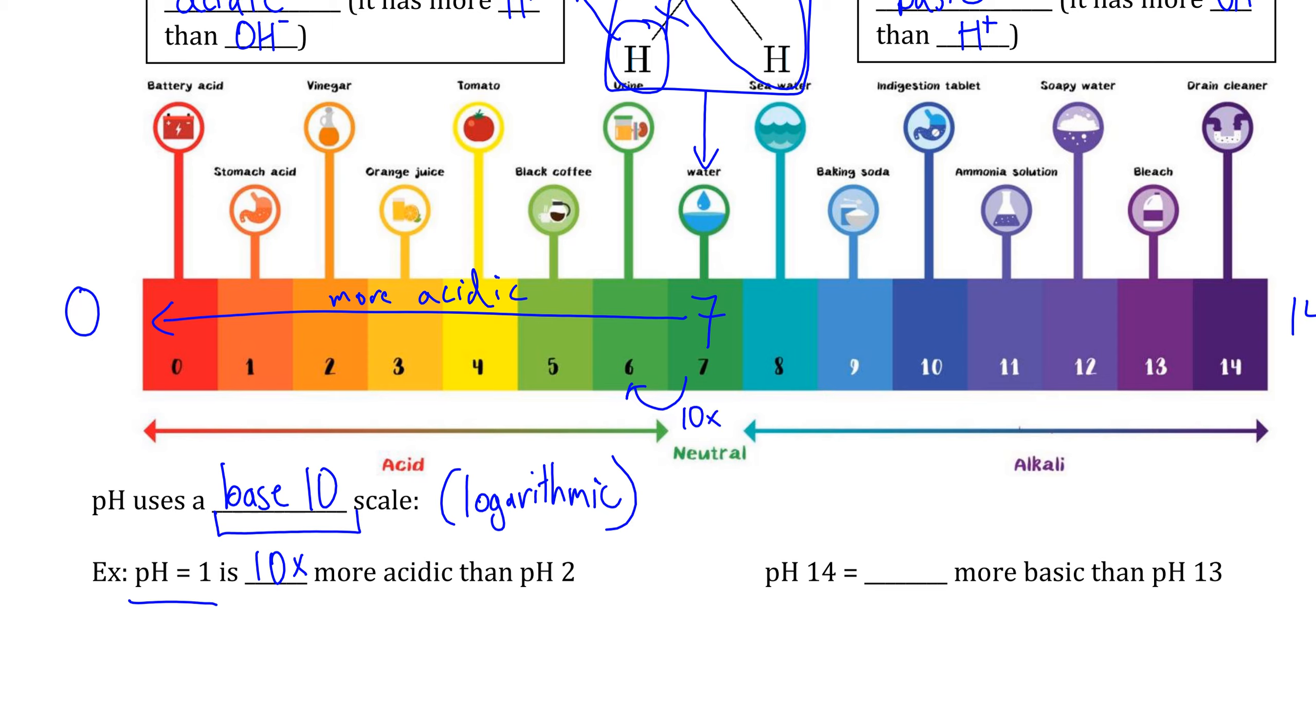A pH of 6 is 10 times more acidic than a pH of 7. A pH of 5 is 10 times more acidic than a pH of 6, and so on, meaning that we can also say, because 10 times 10 is 100, we can say that a pH of 5 is 100 times more acidic than a pH of 7. This is what we mean by a base 10 or logarithmic scale.